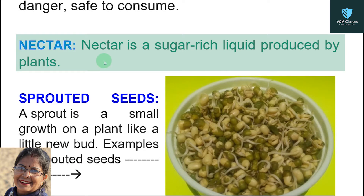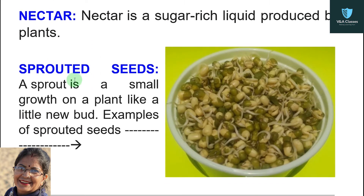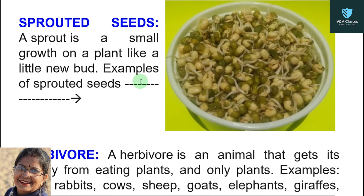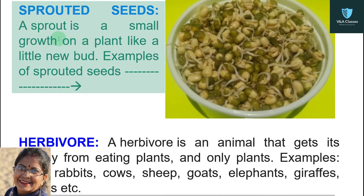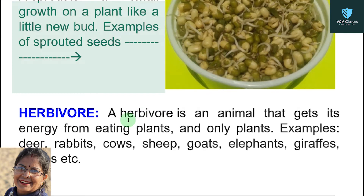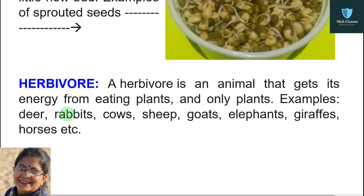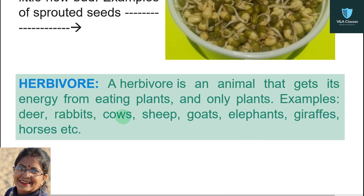Next is nectar. Nectar is a sugar-rich liquid produced by plants. Next is sprouted seeds. A sprout is a small growth on a plant, like a little new bud, and that is what sprouted seeds are.